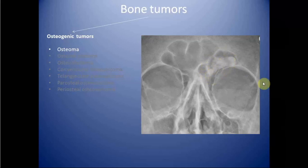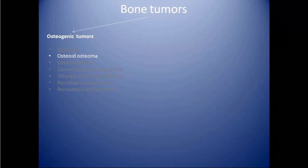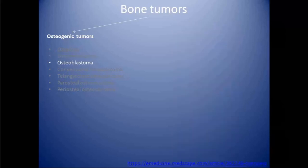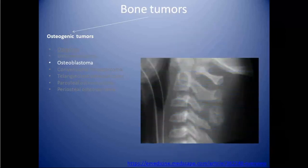Next is osteoid osteoma, which is seen as a lucent focus with surrounding sclerosis in the diaphysis of long bones, and can have a nidus with central calcification. They are mostly seen in the diaphysis of long bones but are also reported in the spine, small bones of the hand and feet, and in the patella. They are mostly seen in young adults and are characterized by pain at night, which is typically relieved by salicylates. The treatment of choice is radiofrequency ablation under imaging guidance.